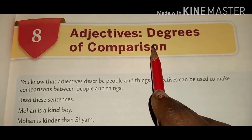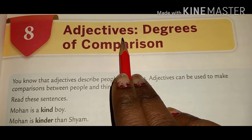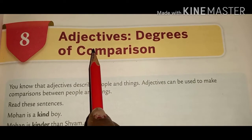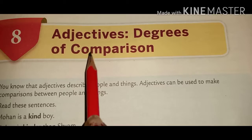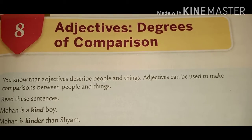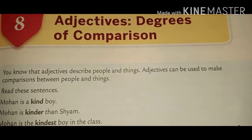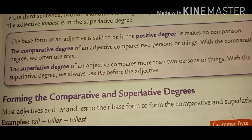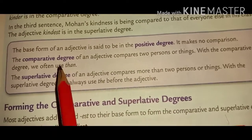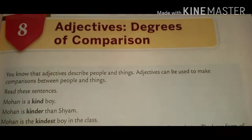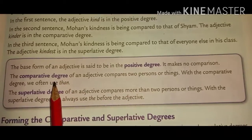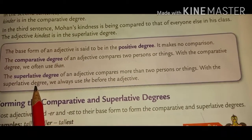Now, Degree of Comparison is a chapter related to adjectives. We call it Degree of Comparison. In degree of comparison, we compare the quality of a noun — that is, the adjective — in many ways, and these ways are known as the degree of comparison. We will study about three forms: positive degree, comparative degree, and superlative degree.